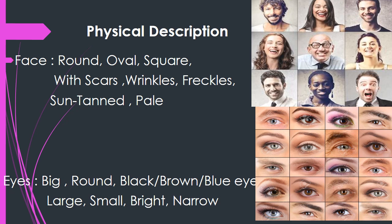The next point is face. You can see different faces on this slide — some are round, some are oval, some are square. 'Scars' means some marks on the face. 'Wrinkles' appear on the faces of older people. 'Freckles' are small spots on the face that are visible to others and are a type of identity. 'Suntanned' means the skin has become dark because of sun rays. 'Pale' means not looking fresh, very pale looking.